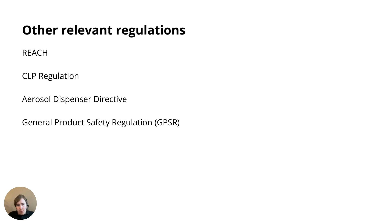Beyond the Cosmetic Product Regulation, there are a number of other EU regulations and directives to be aware of. First, there is the REACH regulation, which is a substance regulation that sets bans, restrictions, and reporting requirements — not entirely different from what was just described — but REACH applies to all consumer products in the EU. In late 2023, the first requirements under Annex 17 of REACH were published concerning restrictions and bans on microplastics specifically for different types of cosmetics, such as rinse-off cosmetics. So REACH is highly relevant also for cosmetics.